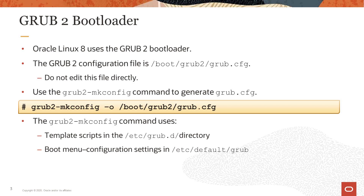The Grub2 configuration file is /boot/grub2/grub.cfg. Do not edit this file directly. If you need to make changes to the Grub configuration, edit the /etc/default/grub file, and then use the grub2-makeconfig command to regenerate grub.cfg. This command uses template scripts in the /etc/grub.d directory and menu configuration settings taken from /etc/default/grub when generating grub.cfg.